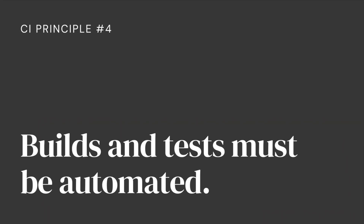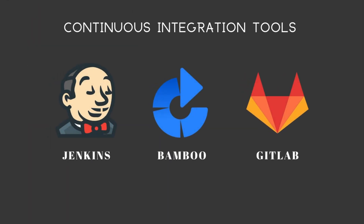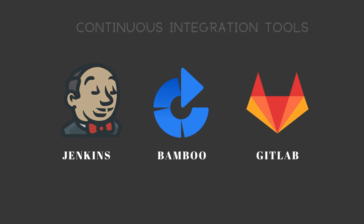Principle number four: builds and tests must be automated. Every commit of the code — every check-in into the source control system — should be built and tested automatically. Continuous integration tools like Jenkins, Bamboo, GitLab, etc. can help in constantly checking the mainline repository for changes. When a change is detected, these tools perform a build and later test the built code.